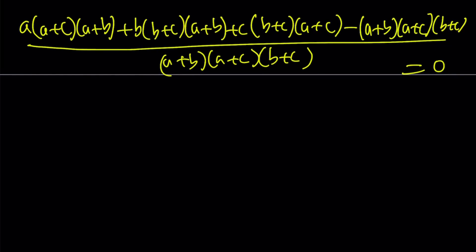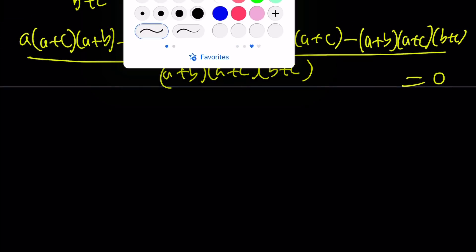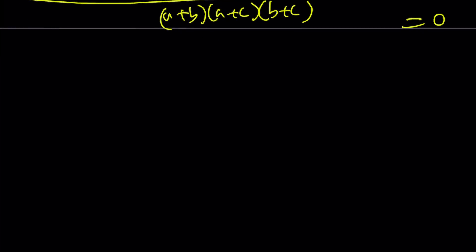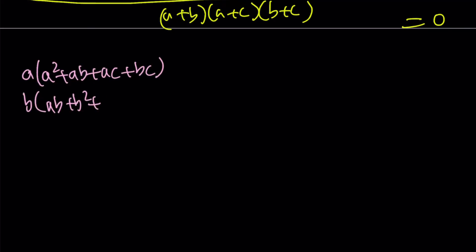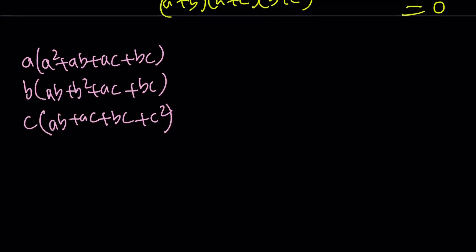In order to simplify this, I'm going to look at each term — the terms are separated by plus and minus signs — and write each result in different rows. So for example, I can multiply and then distribute by a in two steps. The first row is going to be a times (a² + ab + ac + bc). The second row is b times (ab + b² + ac + bc). The third is c times (ab + ac + bc + c²). Basically you have a square of each term and then everything else is ab, ac, and bc.